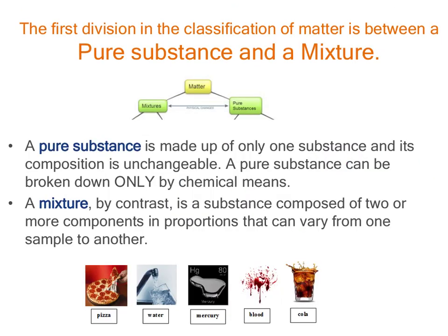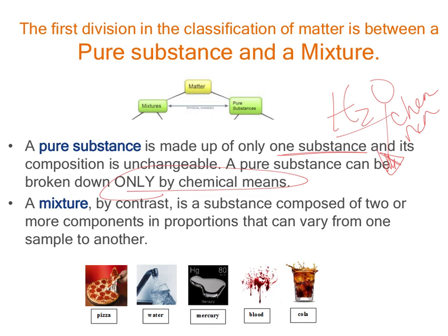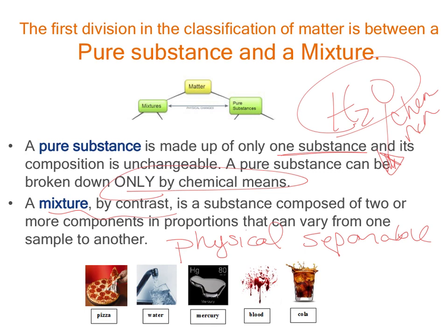A pure substance has only one thing in it, and its composition is unchangeable. If you have distilled water, it's going to be H₂O no matter where you sample it. A pure substance can be broken down only by chemical means — you can't physically start plucking hydrogen and oxygen atoms off. A mixture, on the other hand, is physically separable and contains two or more components. The composition of a mixture is variable — for example, two glasses of iced tea can have totally different ratios of tea to water.